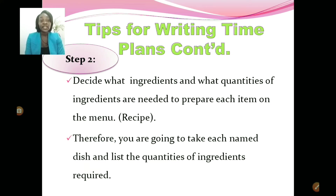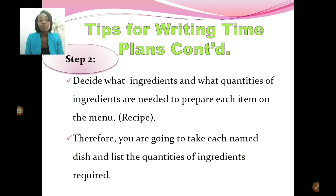Step three: decide what ingredients and what quantities are needed to prepare each item on the menu. This means you will need your recipe. It is impossible to write a time plan without a recipe, because you need your list of ingredients with quantities and the method of preparation. You will take each named dish and list the quantities of ingredients required.